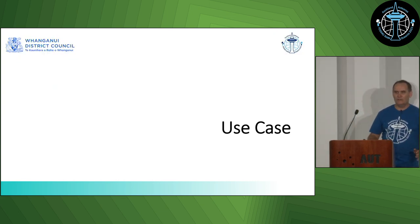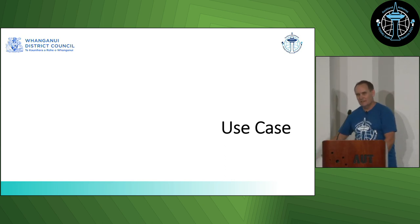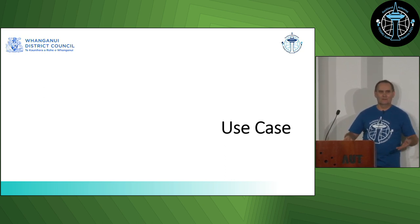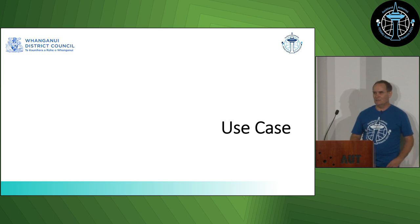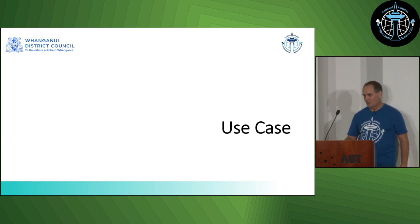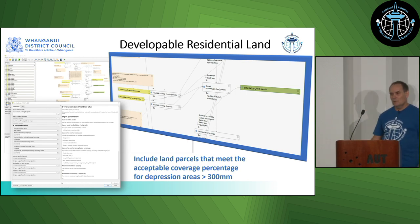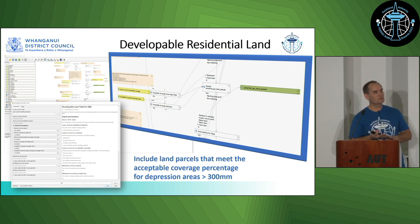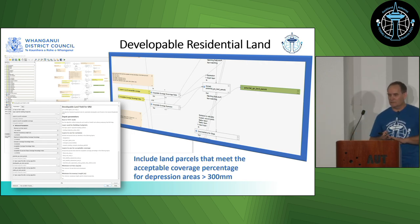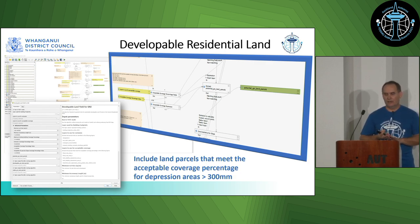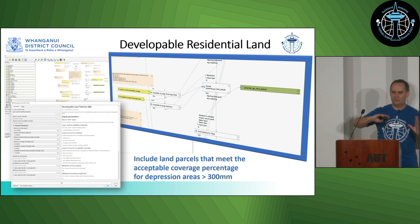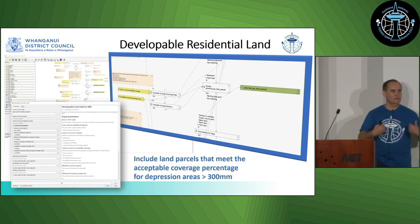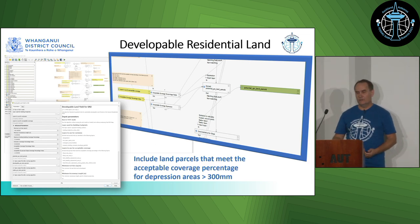We should probably look at a use case. We've produced overland flow paths and depression areas — how do we actually use them? Quite often this stuff is bought and just sits on a shelf. Our use case was looking at developable residential land: examining all the land parcels in our general residential zone and working out if they fell within certain parameters against certain hazards. Depression areas was one of those hazard layers.